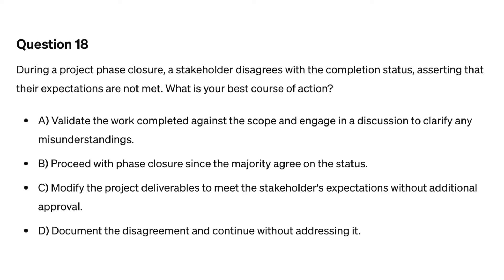Question eighteen. During a project phase closure, a stakeholder disagrees with a completion status, asserting that their expectations are not met. What is your best course of action? A. Validate the work completed against the scope and engage in a discussion to clarify any misunderstandings. B. Proceed with phase closure since the majority agree on the status. C. Modify the project deliverables to meet the stakeholder's expectations without additional approval. D. Document the disagreement and continue without addressing it.